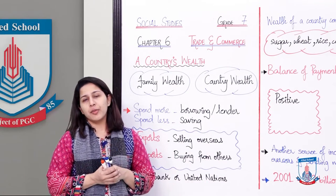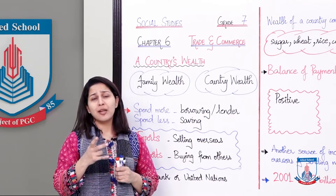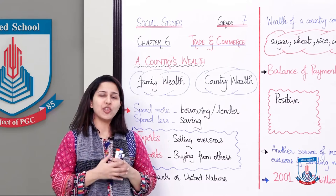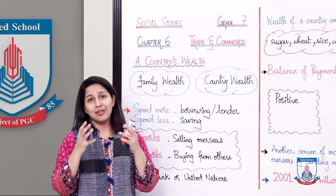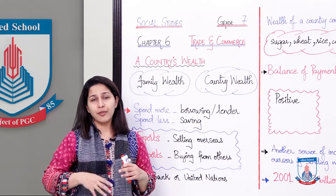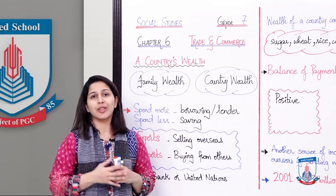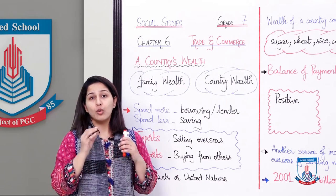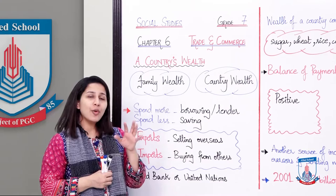Trade and Commerce. Trade, yani tajarat. Tajarat kab possible hoti hai? Tajarat tab possible hai jab aap ke paas koi aisi cheez hai joh zada miktar mein hai, and after using for yourself, you can exchange — aur aap kisi aur se uska tabadlaa kar sakte hai for something you want, us cheez ke liye joh aap ko chahiye ho.